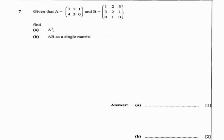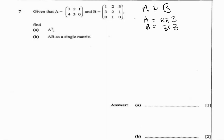Let's jump into the question right away. We're given two matrices A and B. A is a 2 by 3 matrix — it has two rows and three columns — while B is a 3 by 3 matrix. That's how we find the dimensions of a matrix: rows times columns.